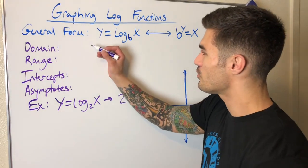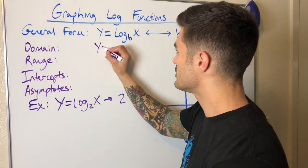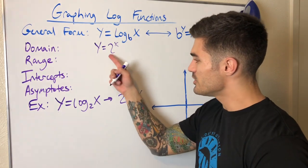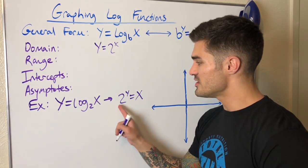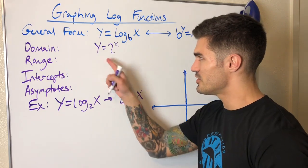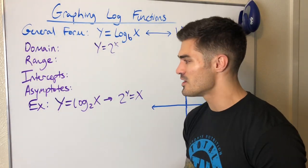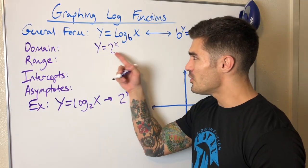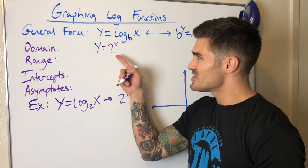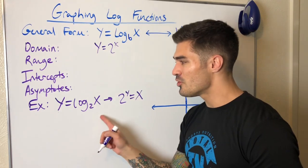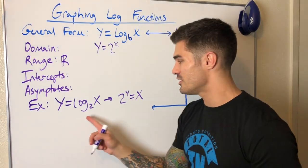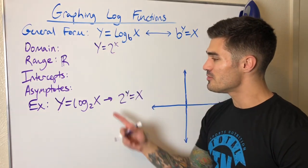How do we find the inverse of a function? We switch the positions of x and y. The general form of an exponential function is y equals 2 to the x — and this is literally just the x and y flipped. So these two are inverses of each other. This is really important: by knowing the inverse, I already know a lot of information. I know the domain is all real numbers, so the range of its inverse is also all real numbers.